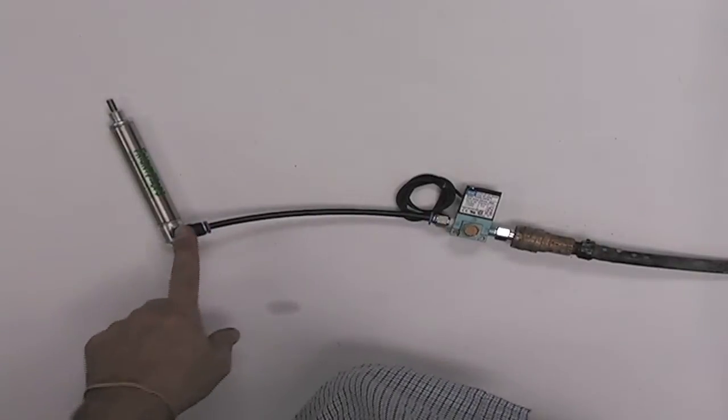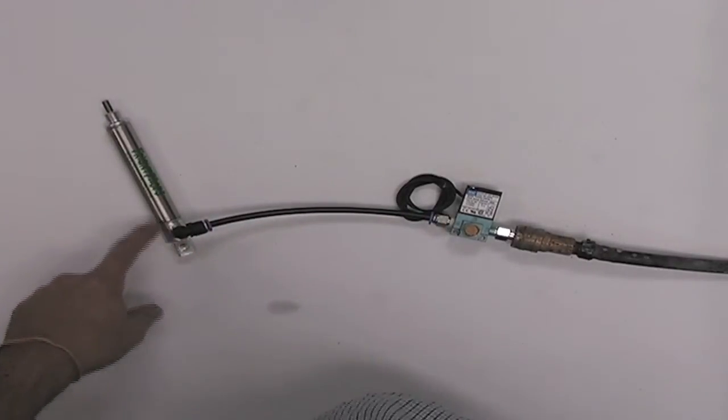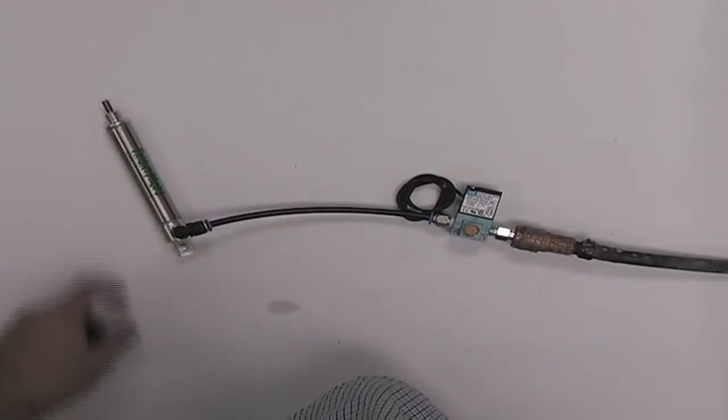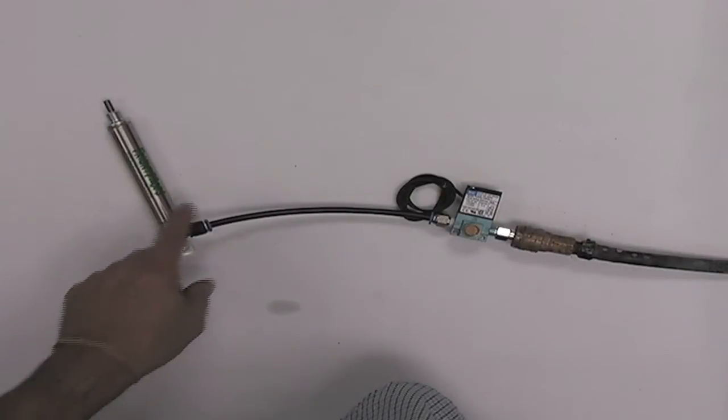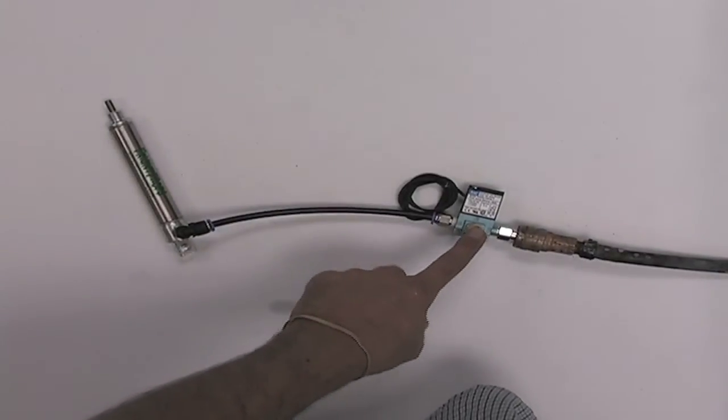When the solenoid is activated, it's going to send air to the bottom of the cylinder pushing out the shaft. When it's deactivated, air is going to release from the shaft, and the exhaust is going to come back out the exhaust port.